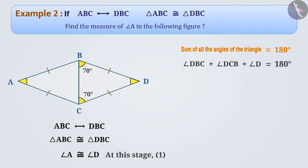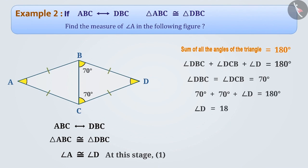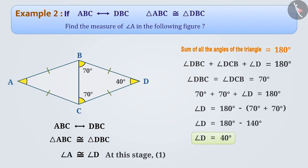Here, angle DBC is equal to angle DCB is equal to 70 degrees. Therefore, 70 degrees plus 70 degrees plus angle D equals 180 degrees. Angle D is equal to 180 degrees minus 140 degrees. Angle D is equal to 40 degrees. Because angle D is equal to 40 degrees and angle A is congruent to angle D, therefore we can say that angle A is equal to 40 degrees.